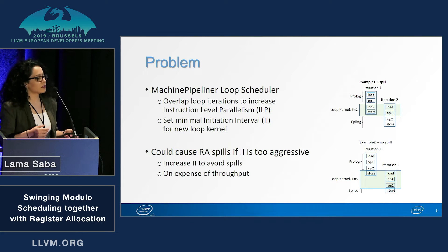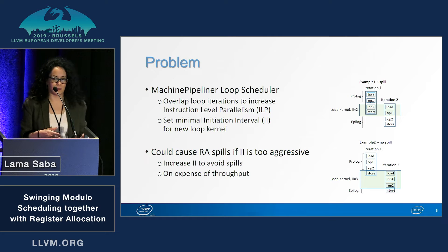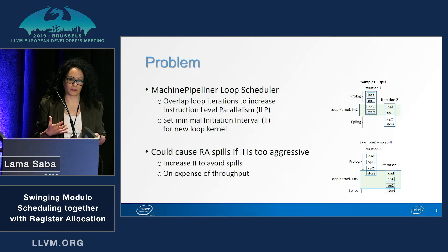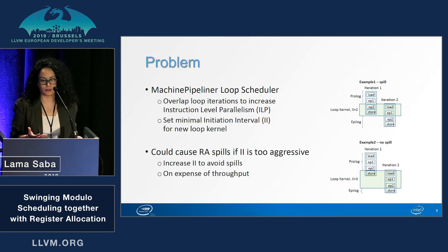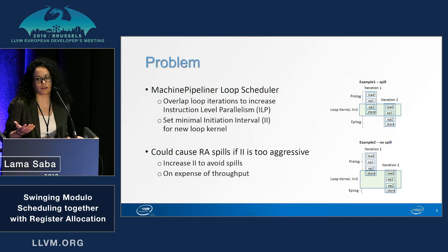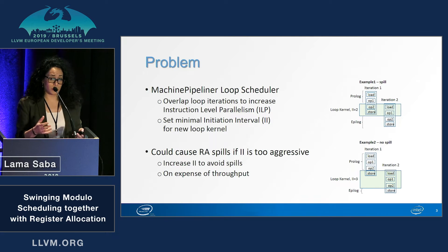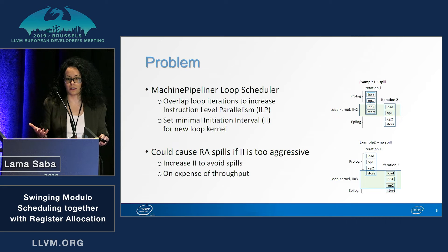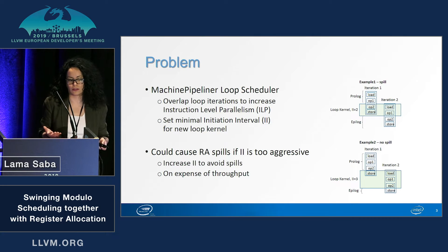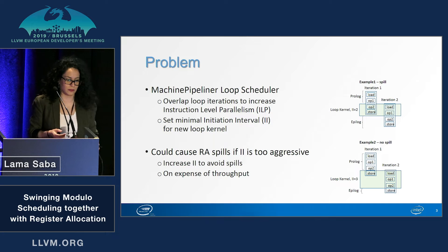If the scheduling with the minimal II was too aggressive, it could later cause spills in the stack in the register allocator due to high register pressure. Whereas if we were to increase the II, we could avoid these spills, of course at the expense of decreased throughput.